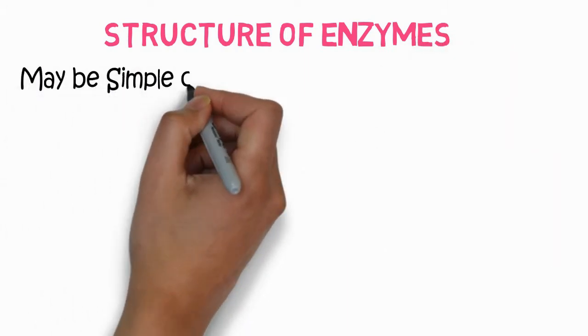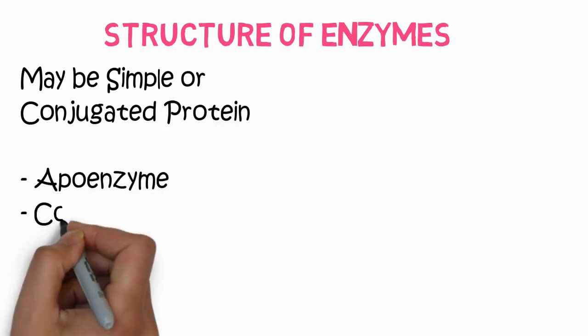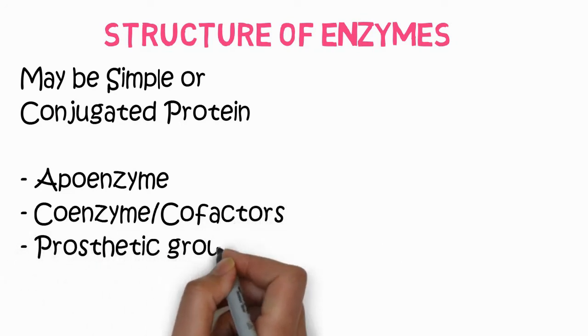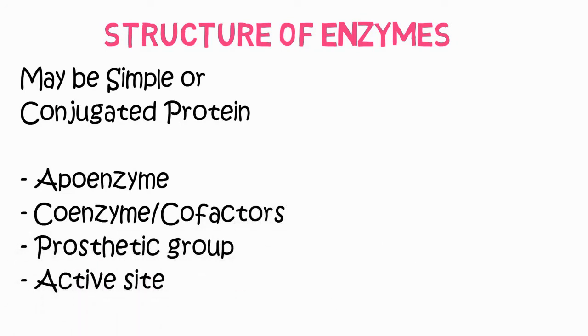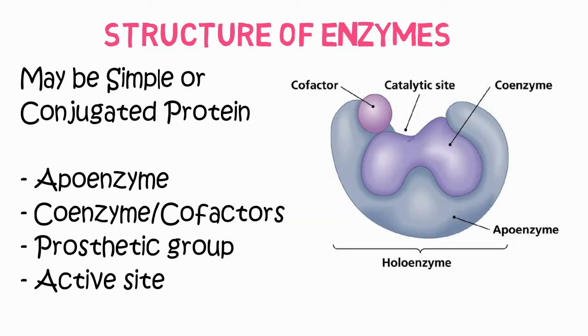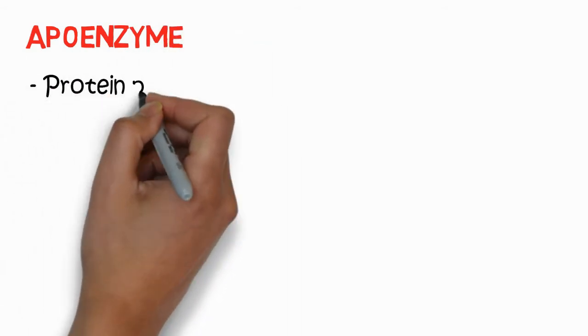First, structure of enzymes. Enzymes are protein in nature, so they may be simple or conjugated proteins. The structure components include apoenzyme, coenzyme or cofactors, prosthetic group, and active site. You can see in this picture the whole enzyme, which we call holoenzyme. It consists of apoenzyme, coenzymes, active site, and cofactor.